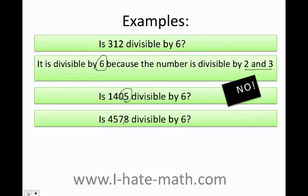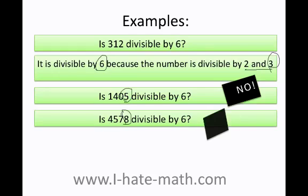For the next number, the first rule holds — it's divisible by 2. Now I add the digits to check divisibility by 3: 4 plus 5 is 9, 9 plus 6 is 16, 16 plus 8 is 24. Because 24 is divisible by 3, yes, this number is divisible by 6.